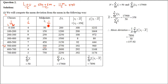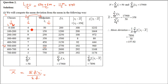Once midpoints Xi are known, compute the mean: multiply frequency (fi) by midpoint (Xi) for each row to get fi×Xi. The sum Σ(fi×Xi) = 17900. Σfi = 50. Therefore, mean X̄ = Σ(fi×Xi) / Σfi = 17900/50 = 358.